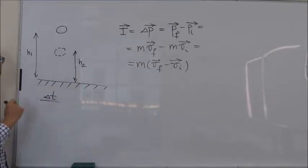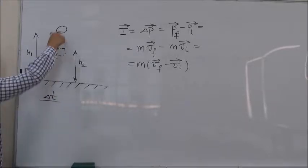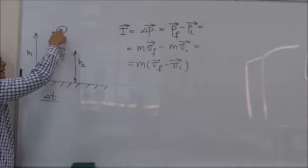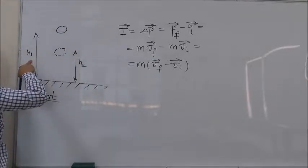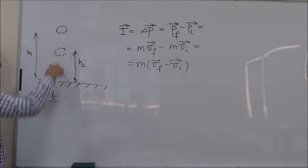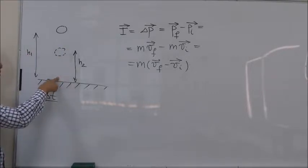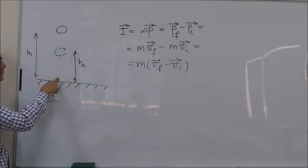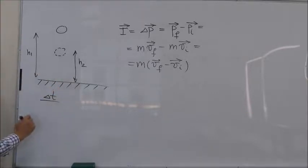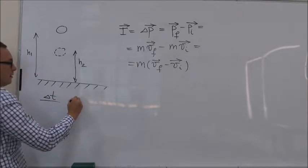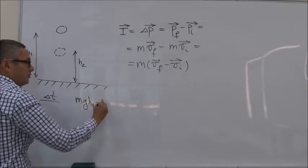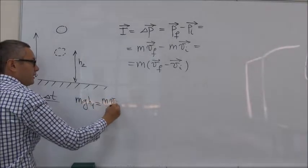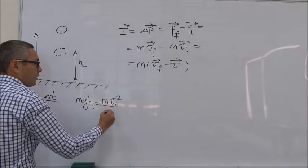So, we can use conservation of energy here. We can say that potential energy of the ball at height H1 is converted entirely into the kinetic energy of the ball at the bottom. So, if I do that, I can say that MGH1 is equal to M V initial squared over 2.